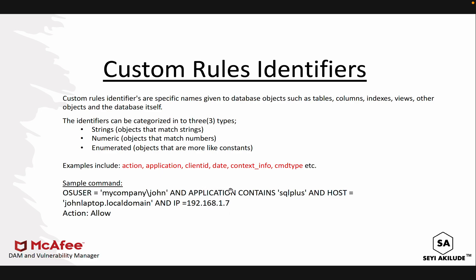For the application, if the application that the user is trying to use to access the database contains SQL Plus, and the host machine is 'John's laptop' on the local domain, and the IP address is 19.16.1.7 — then allow. So this particular statement is custom. This is the syntax of how a rule should look like. It has different objects, and those objects need to be filled depending on the type — it could be a string object. Most of the time, most of your objects will be strings, and you might hardly use an enumerated type. The enumerated type may come into play when writing customized scripts.